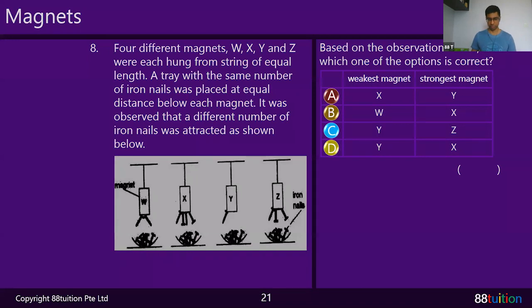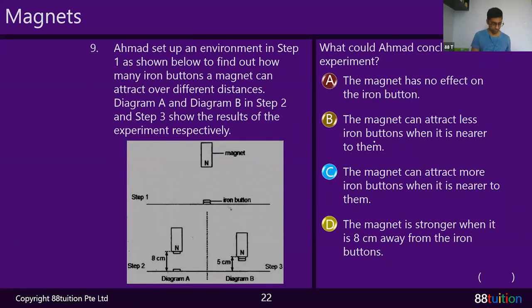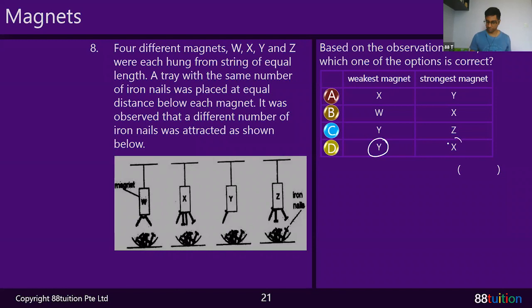This question I'll just tell you the answer - you tell me. The weakest magnet is Y, the strongest is X. Answer is D.